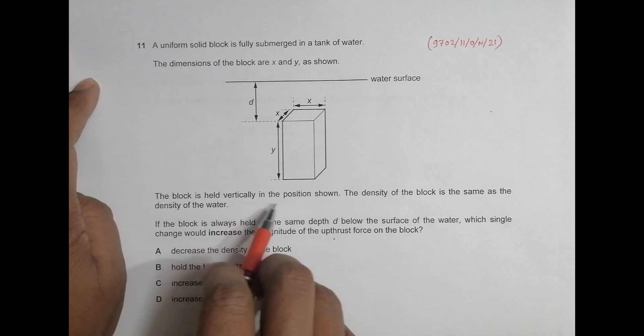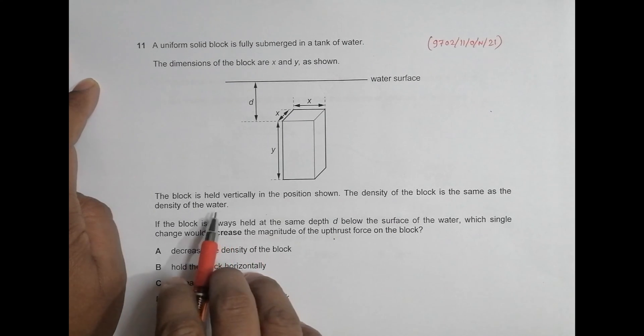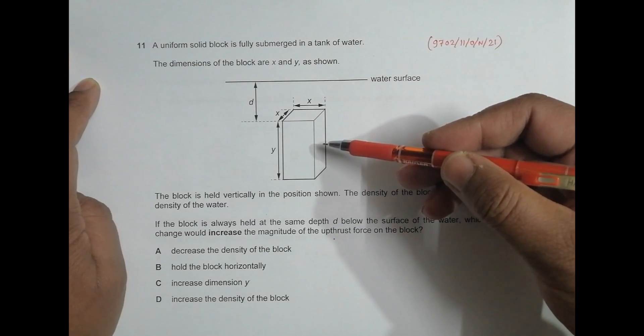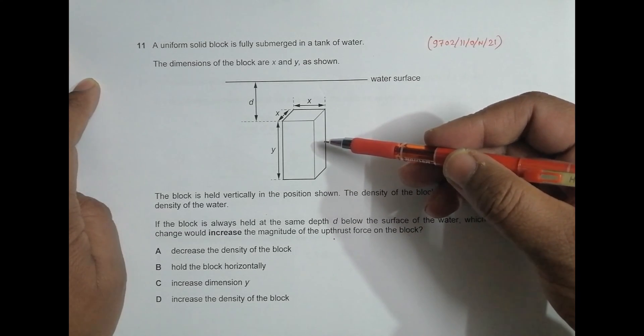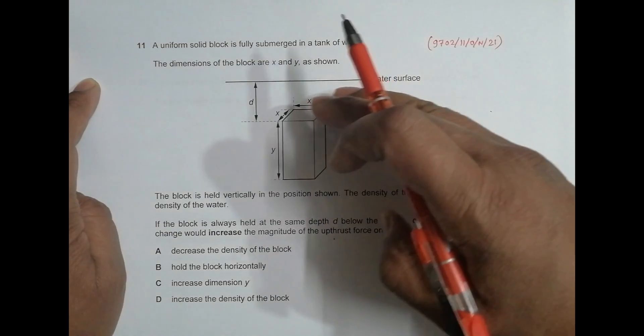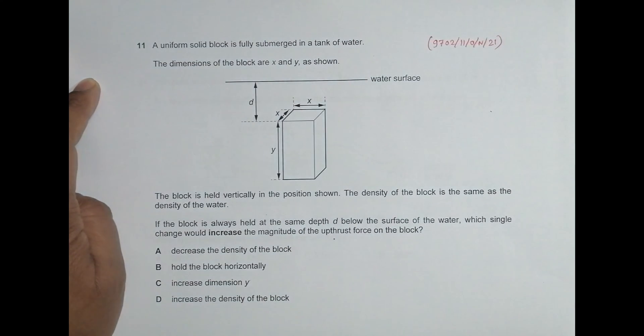The block is held vertically in the position shown. Density of the block is the same as the density of water, so that means we are holding it forcefully here, because if they are the same density, it would be on the surface. It would be just submerged and should be floating in the surface.